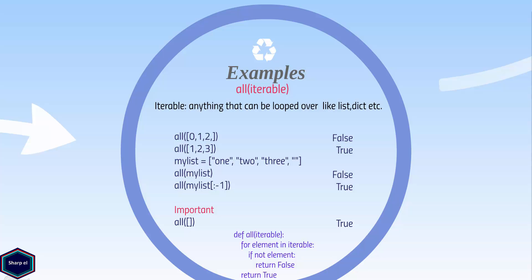Here you can see the syntax of all function. An iterable is anything that can be looped over, like a list, dictionary, etc.